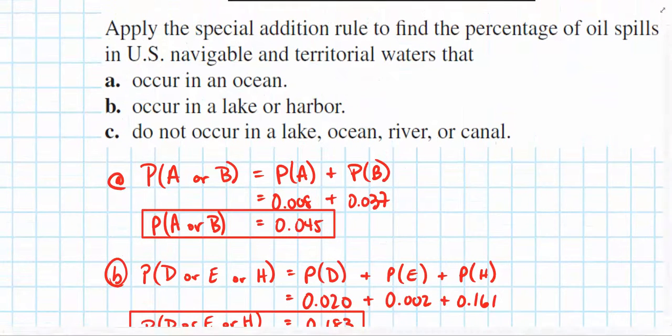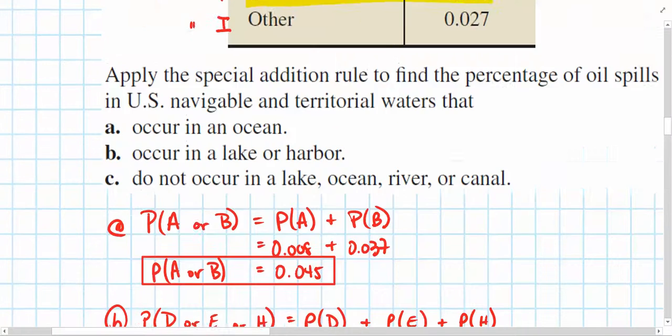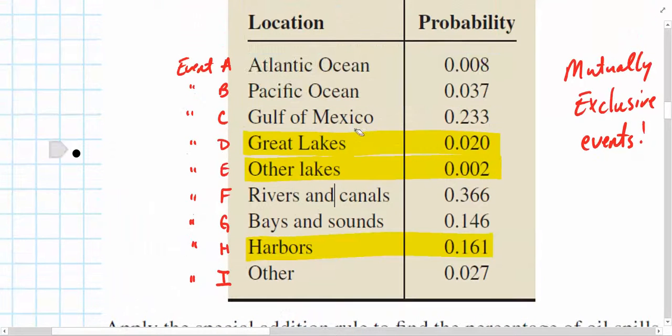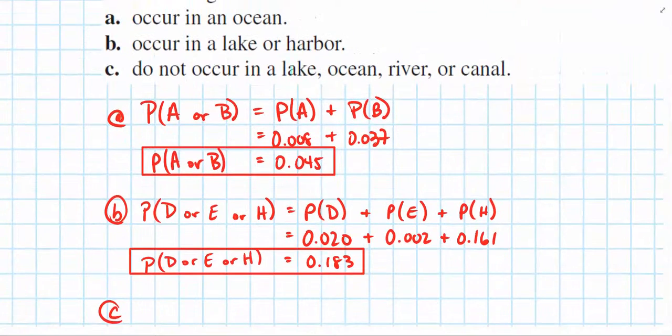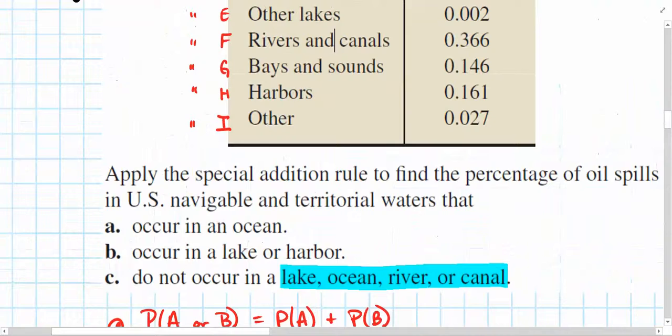Let's answer this last one. Now, what's the probability that they do not occur in a lake, ocean, river, or canal? So, not a lake, river, ocean, or canal. If it were me, I would probably identify those events that do fall in a lake, river, ocean, or canal. So, lake, river, ocean, or canal. That's what we're looking for. Here's an ocean. Here's another ocean. Lakes. Rivers and canals.